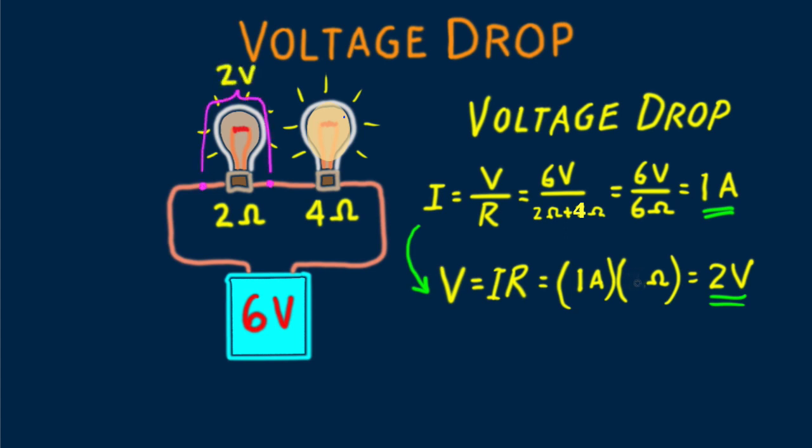By the same reasoning, for the 4 ohm bulb, 1 amp times 4 ohms equals 4 volts. And sure enough, 2 volts plus 4 volts equals the 6 volts supplied by the battery. So we say there's a voltage drop of 2 volts across one bulb and 4 volts across the other.